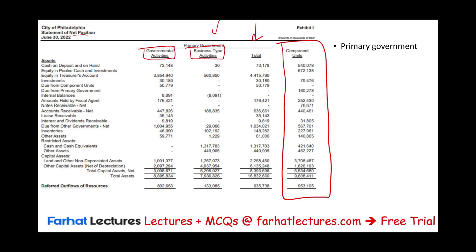Focus on the governmental activities and the business-type activities. Looking at the balance sheet, they have cash, investments, receivables — including due from, notes receivable, accounts receivable, lease receivable, and interest/dividend receivable — as well as inventories. They also have land and other capital assets, net of depreciation.